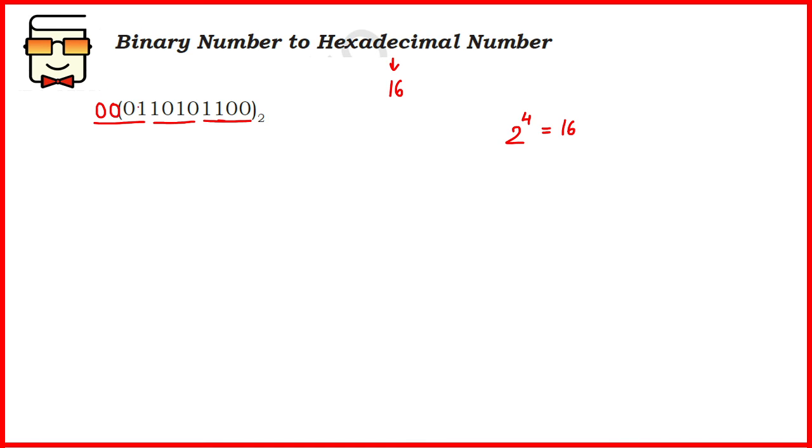When you do this for the given binary number in this case, you will get three groups of four binary digits. Three groups, each having binary digits, and then you'll have to write the hexadecimal representation corresponding to each group.